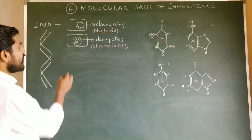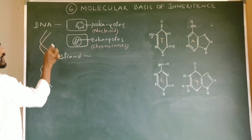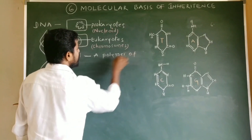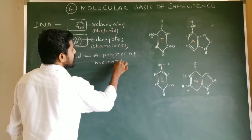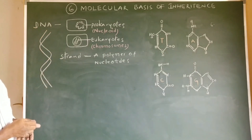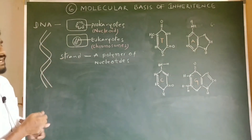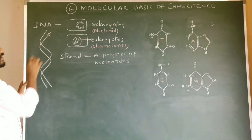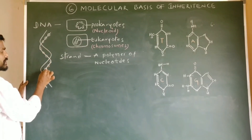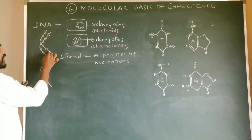Each strand of DNA is a polymer of nucleotides. Nucleotides are the monomeric units which make up a strand of DNA — they are the basic structural units of a DNA strand. The sequence of nucleotides makes one strand of DNA, and likewise the sequence of nucleotides makes the other strand of DNA.